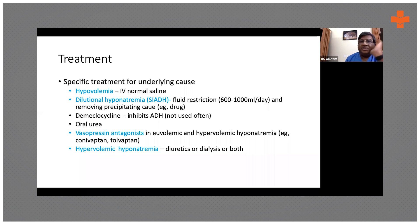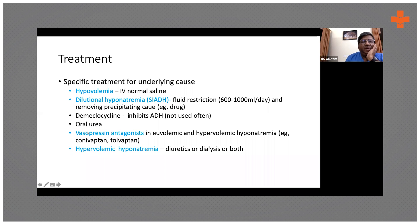Demeclocycline, which is a derivative of tetracycline, is also found to help, but it's not used very often. Oral urea is something that has come up recently but is not in regular use. What we do use frequently in patients with moderate to severe hyponatremia is vasopressin antagonists, especially in euvolemic and hypervolemic hyponatremia.